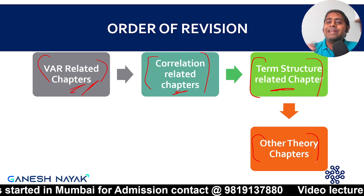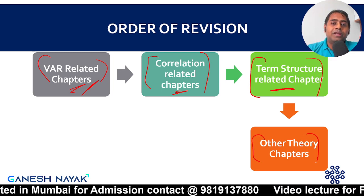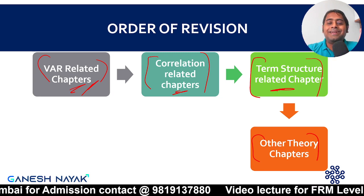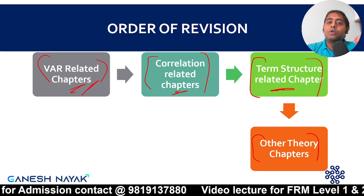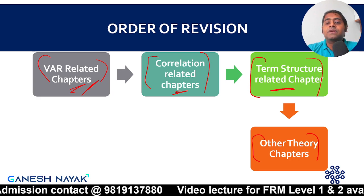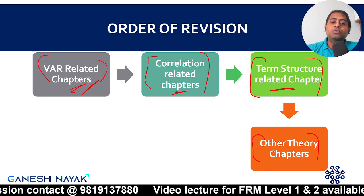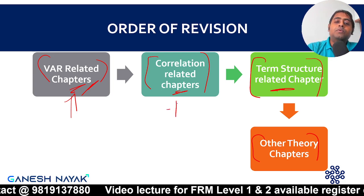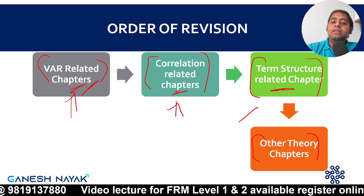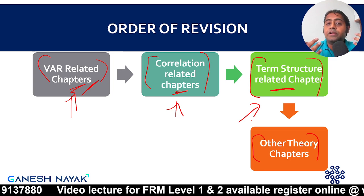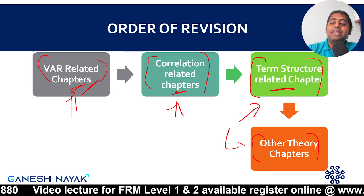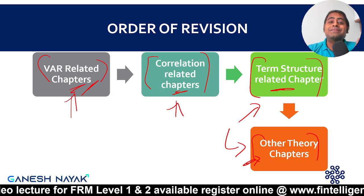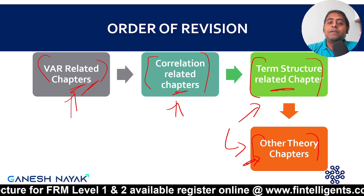Further, there are around four chapters focused explicitly on term structure — that is, the interest rate and yield curve creation logic — with certain models that are important for your exam, and those four chapters should be done in one go. There are also certain standalone chapters like volatility smiles and the Fundamental Review of the Trading Book, categorized into a fourth bucket.